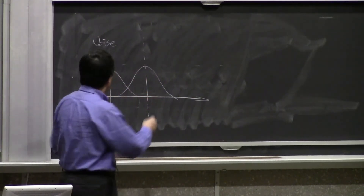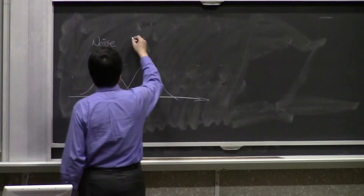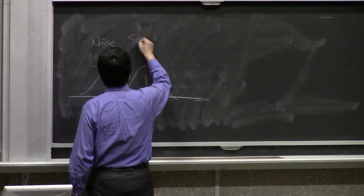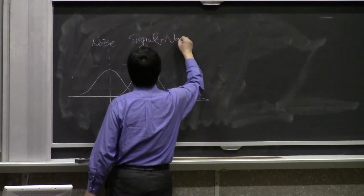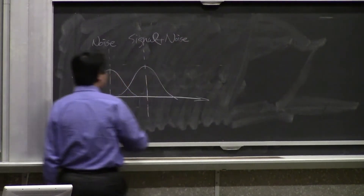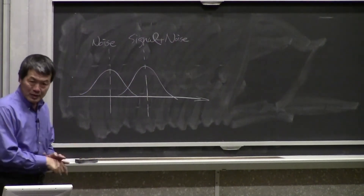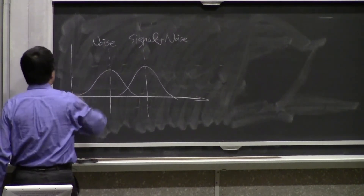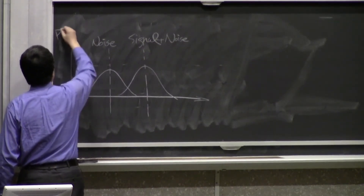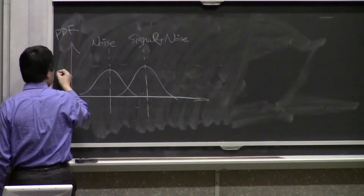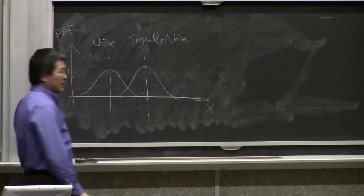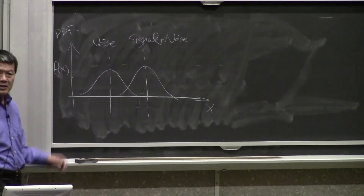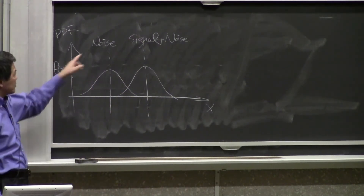That second distribution is shifted because the square changes the mean of the background, and we call this signal plus noise. So there are two distributions — this is the probability density function — and this variable is what we measure. Whenever you see a spot on the screen, your brain through your visual system samples the darkness.